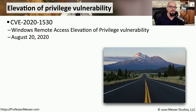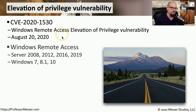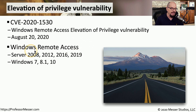Here's a practical example of a privilege escalation: CVE-2020-1530, titled the Windows Remote Access Elevation of Privilege Vulnerability. It was released on August 20th of 2020. This is specific to Microsoft Windows and the Windows Remote Access application, which runs on Server 2008, 2012, 2016, 2019, Windows 7, Windows 8.1, and Windows 10.